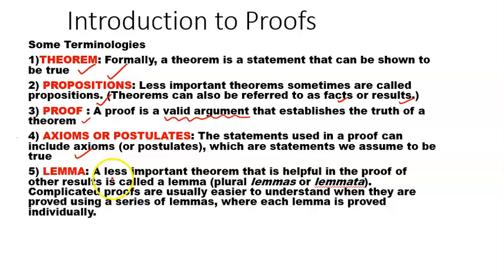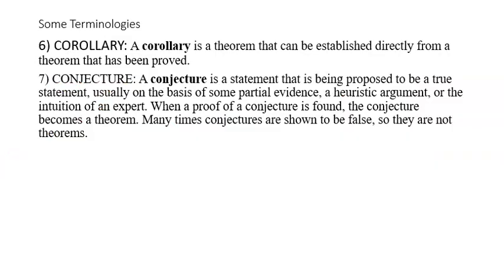A lemma is a less important theorem that is helpful in the proof of other results. Complicated proofs are usually easier to understand when they are proven using a series of lemmas, where each lemma is proved individually. If you have a long proof, instead of proving the whole thing in one go, you prove smaller results, and based on those smaller results you conclude the theorem is correct. A corollary is a theorem that can be established directly from a theorem that has been proved — subsequent results which follow from a theorem are known as corollaries.